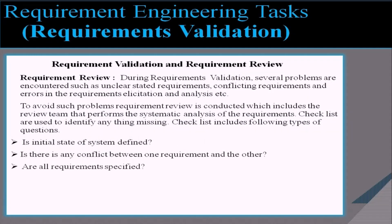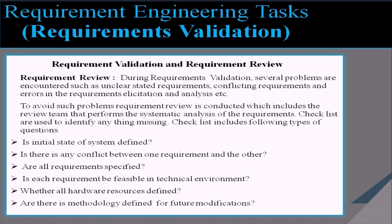During requirement validation, several problems may be encountered such as unclearly stated requirements, conflicting requirements, and errors in requirements illustration and analysis. To avoid such problems, a requirement review is conducted where a review team performs a systematic analysis of requirements. Checklists are used to identify anything missing. Example checklist questions include: Is the initial state of the system defined? Is there any conflict between requirements? Are all requirements specified? Is each requirement feasible in the technical environment? Are all hardware resources defined? Is there a methodology defined for future modification?